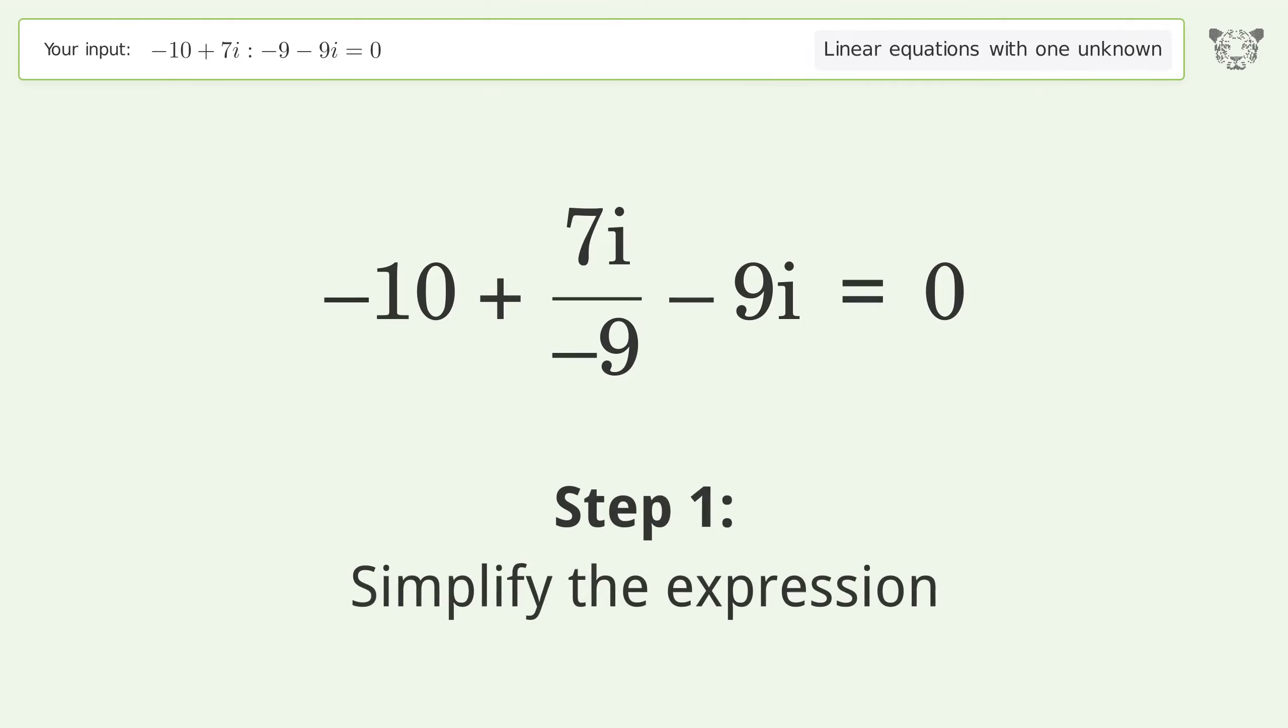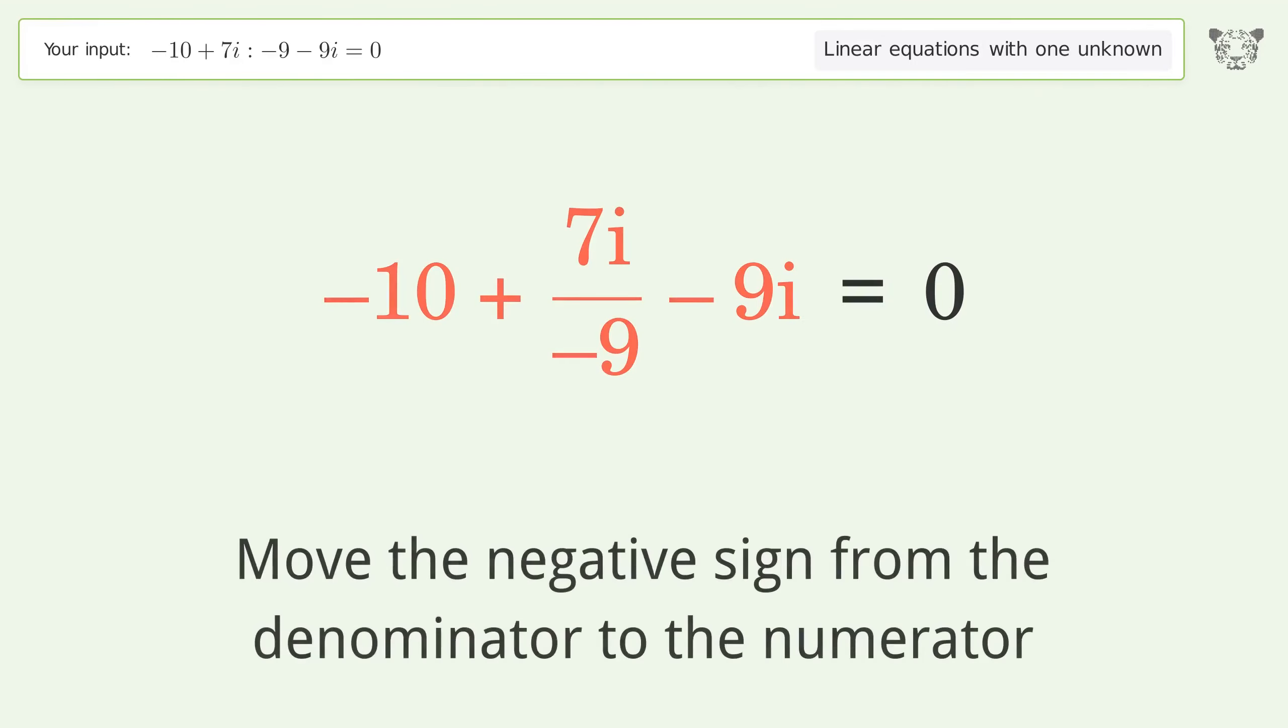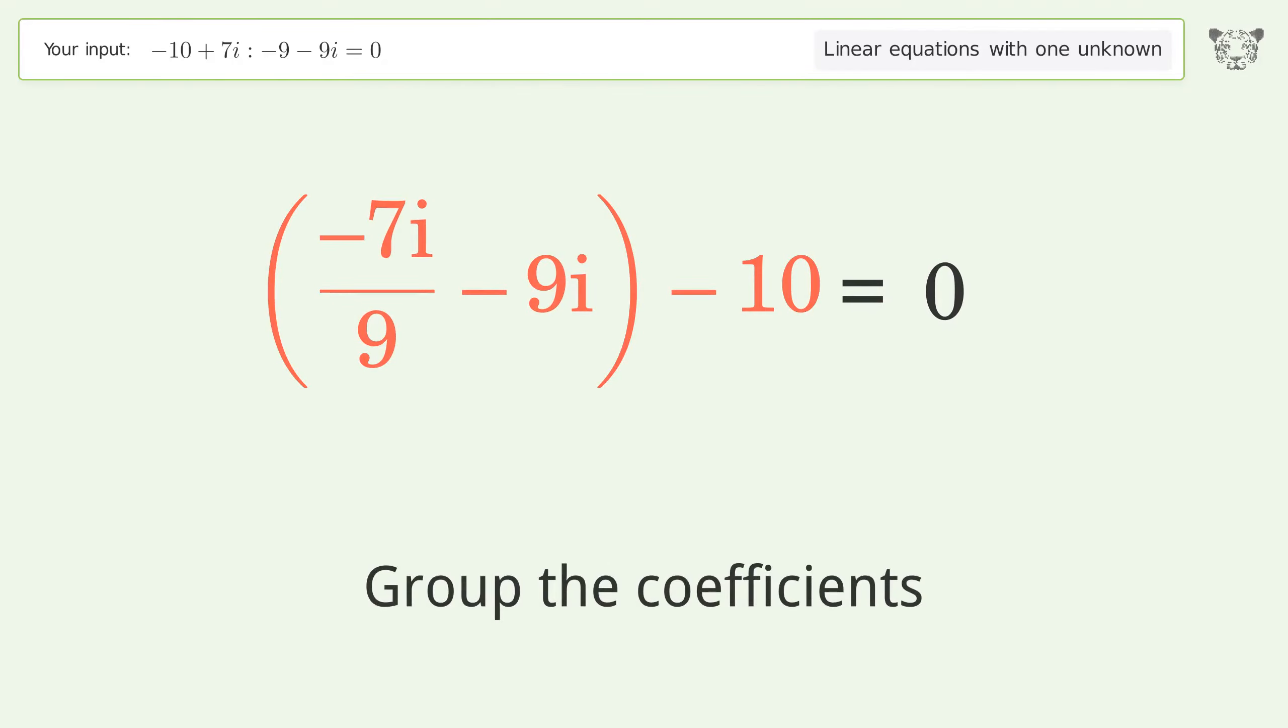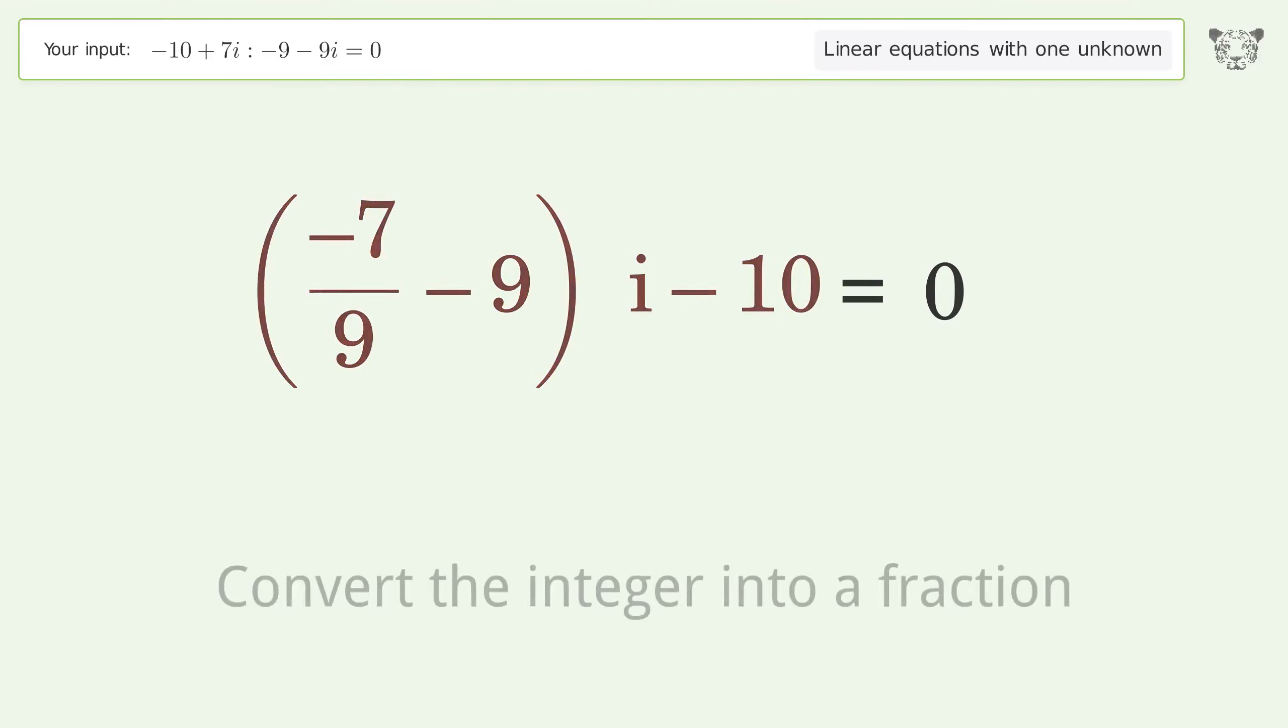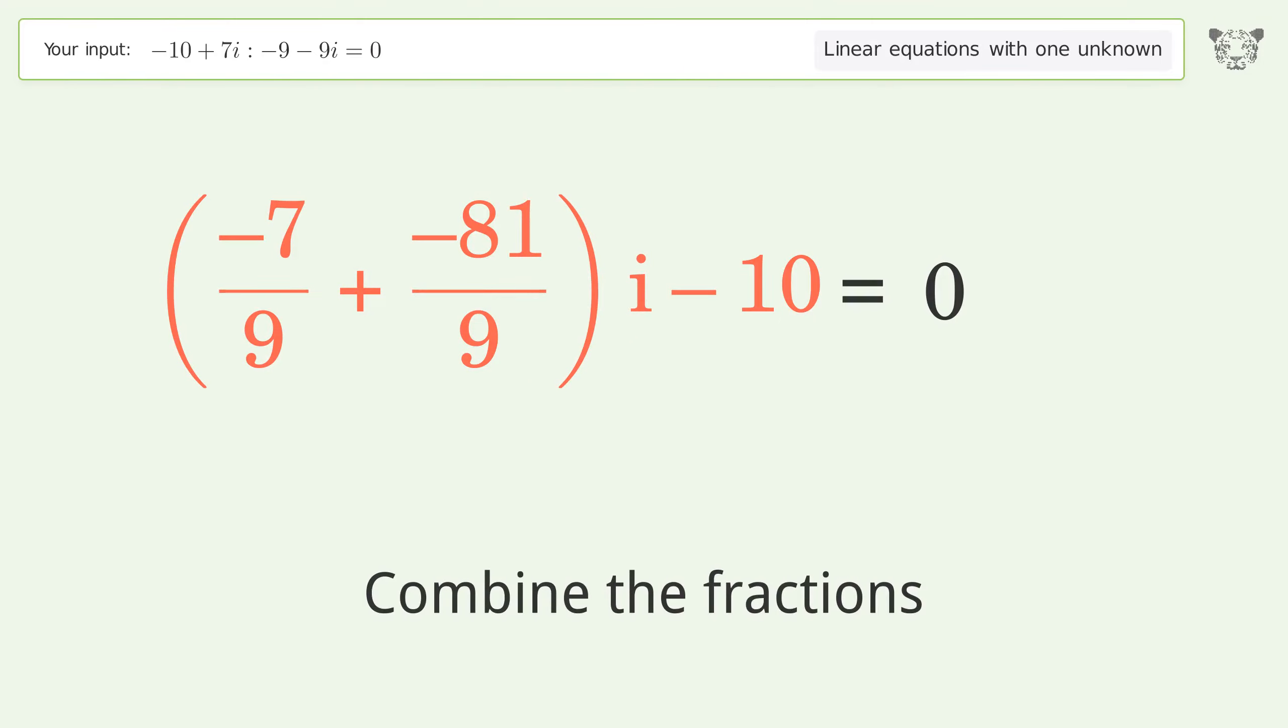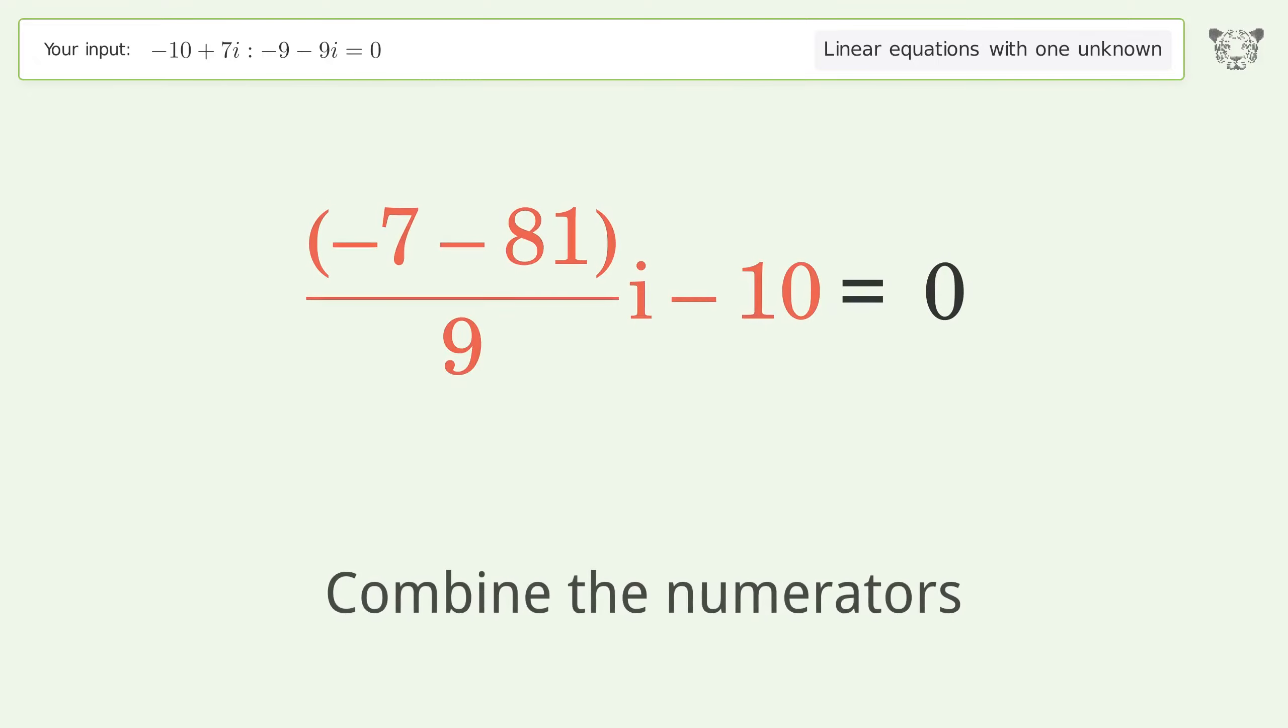Simplify the expression. Move the negative sign from the denominator to the numerator. Group like terms. Group the coefficients. Convert the integer into a fraction. Combine the fractions. Combine the numerators.